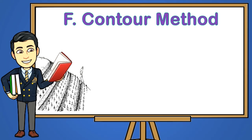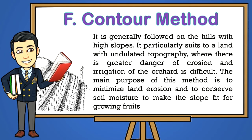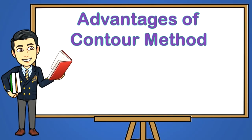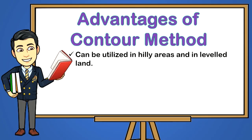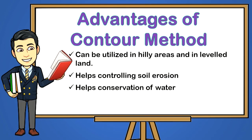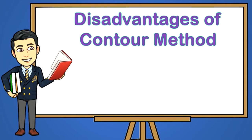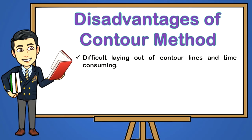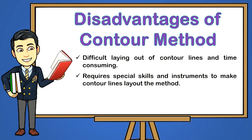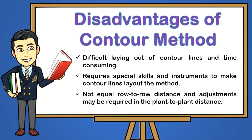F — Contour Method. It is generally followed on hills with high slopes. It particularly suits land with undulated topography where there is greater danger of erosion and irrigation of the orchard is difficult. The main purpose of this method is to minimize land erosion and to conserve soil moisture to make the slope fit for growing fruits. Advantages: one, can be utilized in hilly areas and in leveled land; two, helps controlling soil erosion; three, helps conservation of water; four, easy path for movements on hill slopes for various tasks in the orchard. Disadvantages: one, difficult laying out of contour lines and time consuming; two, requires special skills and instruments to make contour lines; three, not equal row distance and adjustments may be required in the plant-to-plant distance.